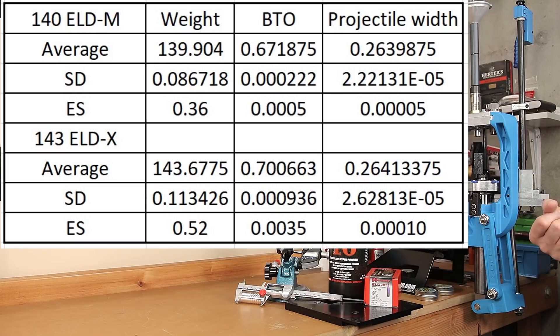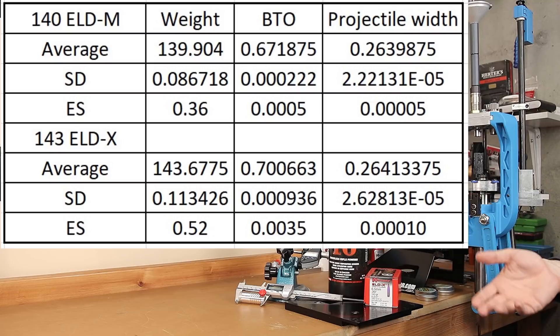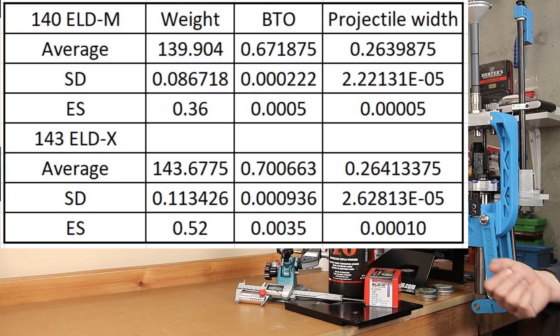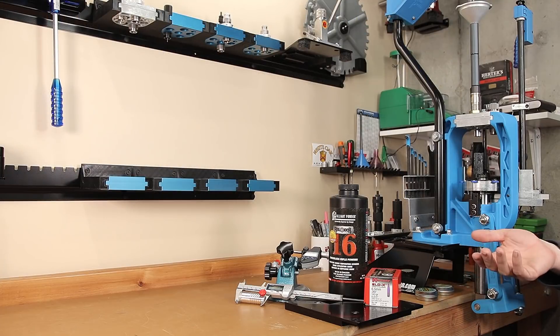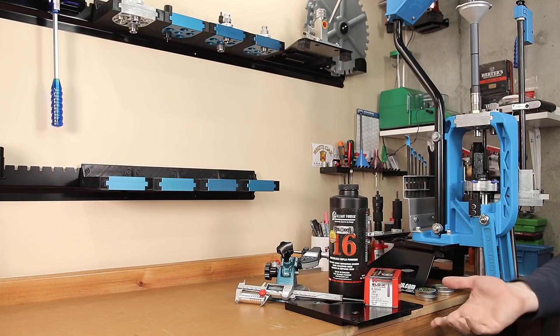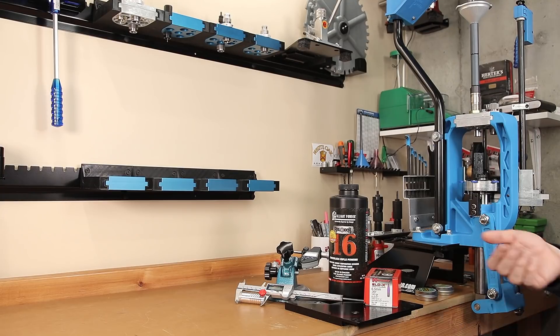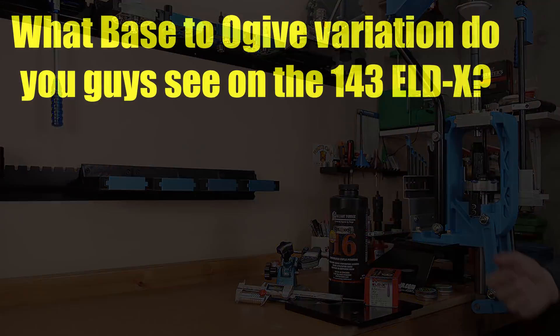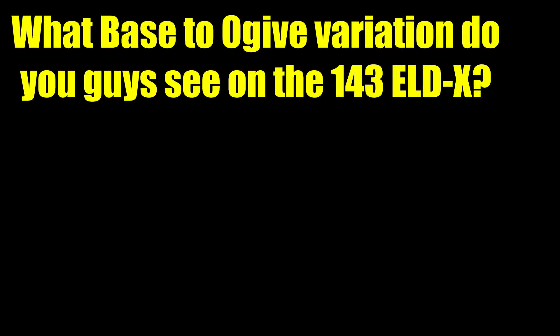The extreme spread on the base to ogive measures for the 140's, these are so consistent that they're within the error in my Mitutoyo calipers, but those measurements were very, very consistent. Looking at the 143 grain ELDX's, the extreme spread of those 40 samples was three and a half thousandths, significantly more than the 140 grain ELDM's. Well, I don't think overall this information is completely damning. I don't know, again, if this is indicative of possibly a bad lot of projectiles. Was I just really lucky with my lot of 140 grain ELDM's? I've shot through several lots of those 140's, and they've been very consistent performers for me. But again, I'd love to know your experience in the comments section below if you're willing to take the time.